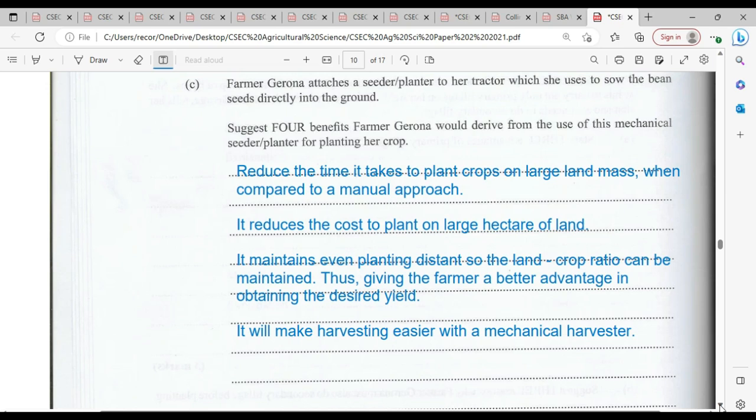Thus giving the farmer a better advantage in obtaining the desired yield for the specified land space. It will make harvesting easier with a mechanical harvester if the seeds are planted with this type of mechanization. As the planting distance will be constant and the harvester can be adjusted to ensure that maximum yield is obtained from the harvest.